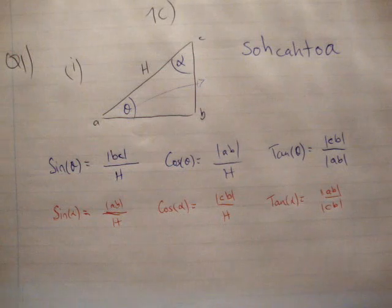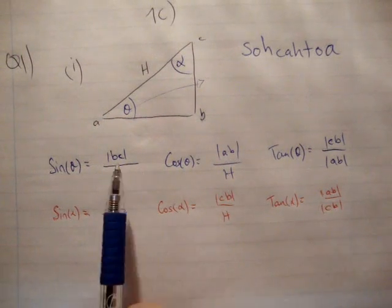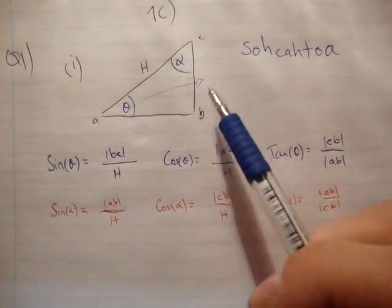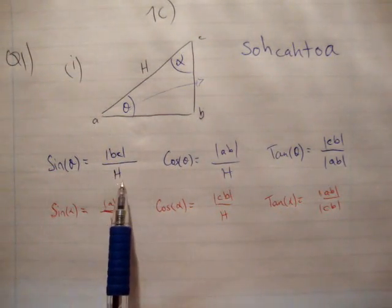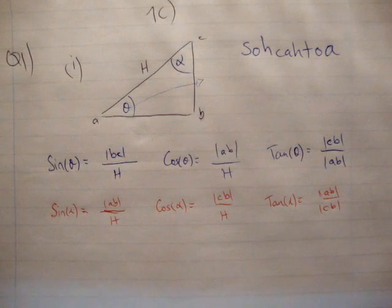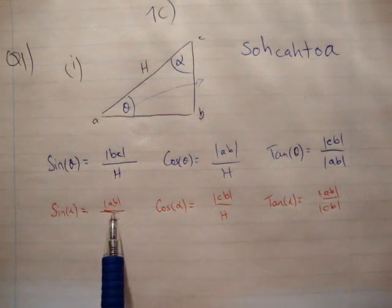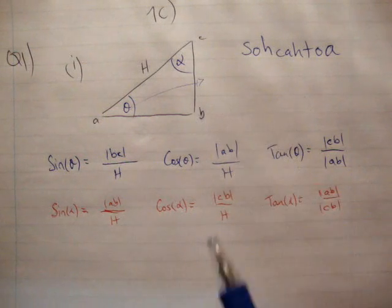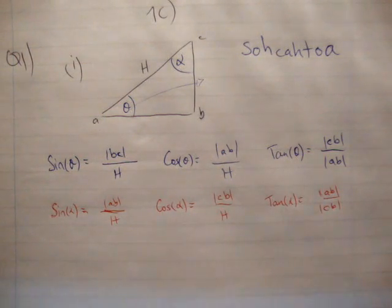That means the length of side AB equals H times cosine theta. The length of side CB equals H times sine of theta. But also, side AB equals H times sine of alpha, and side CB equals H times cosine of alpha.